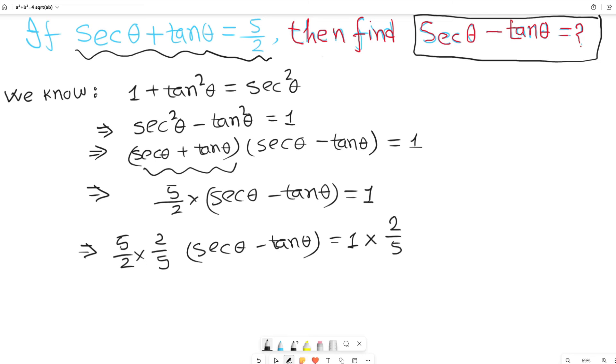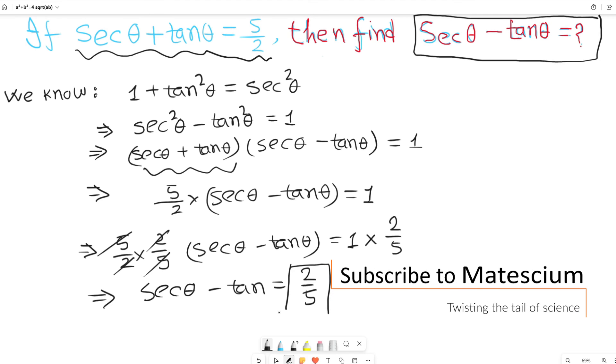I want to get rid of this 5 over 2 from the left hand side. This 5 and that 5 are gone, and this 2 and that 2 are gone. The remaining is sec theta minus tan theta equals 2 over 5. So what's the answer? Sec theta minus tan theta equals 2 over 5. This is the answer.